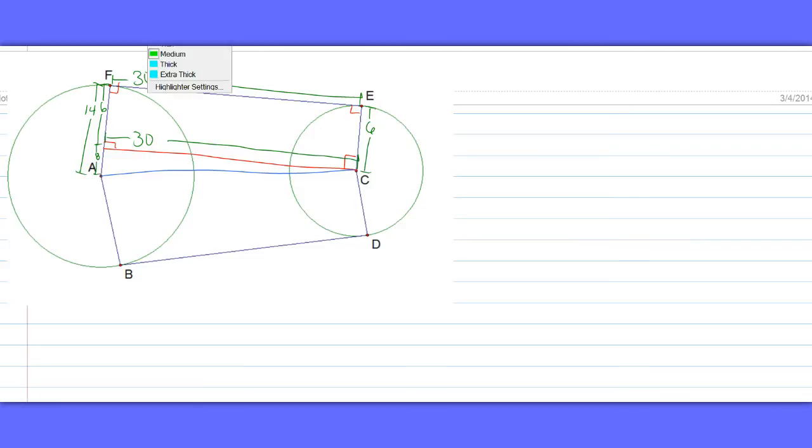And now we also have this small right triangle. In that right triangle, here is our right angle. From this angle that we're trying to find, 8 is the adjacent and 30 is the opposite.